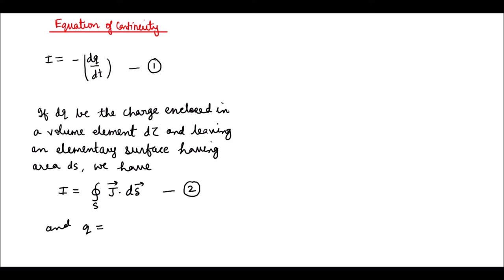And Q equal to rho d tau. Here J is the current density and rho is the charge density, that is charge per unit volume. Let this one be equation number three.